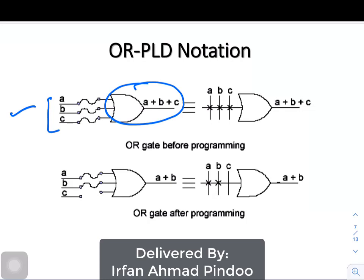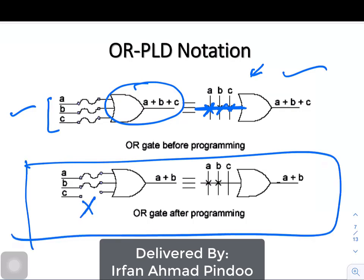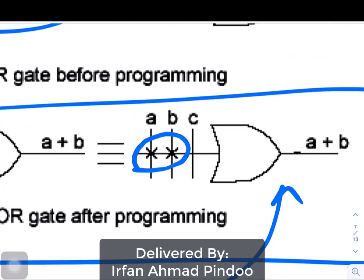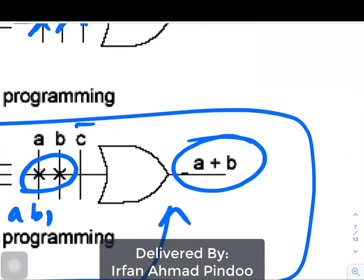The same thing is shown here also — all three connections are present so the output is A plus B plus C. In the alternate representation, one line is connected and the rest are shown with programming. Where C is not present, in the alternate way you can see there is a cross for A and B meaning they are connected, and at C there is no cross, meaning no connection. So the value is only A plus B.